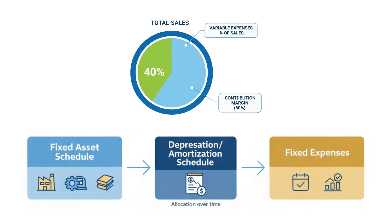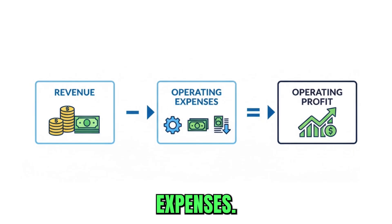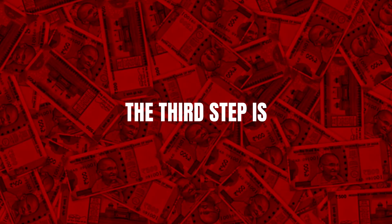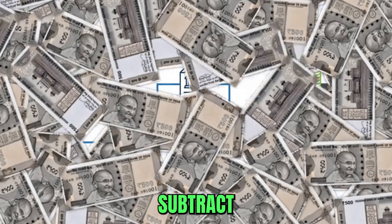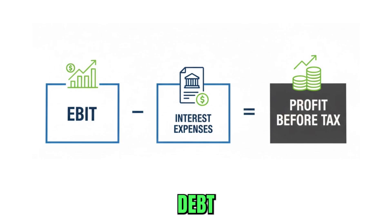Once we have calculated operating expenses, we can calculate our operating profit, which is revenue minus operating expenses. Then the third step is after EBIT, we have to subtract interest expenses, which are directly linked to your debt balances.